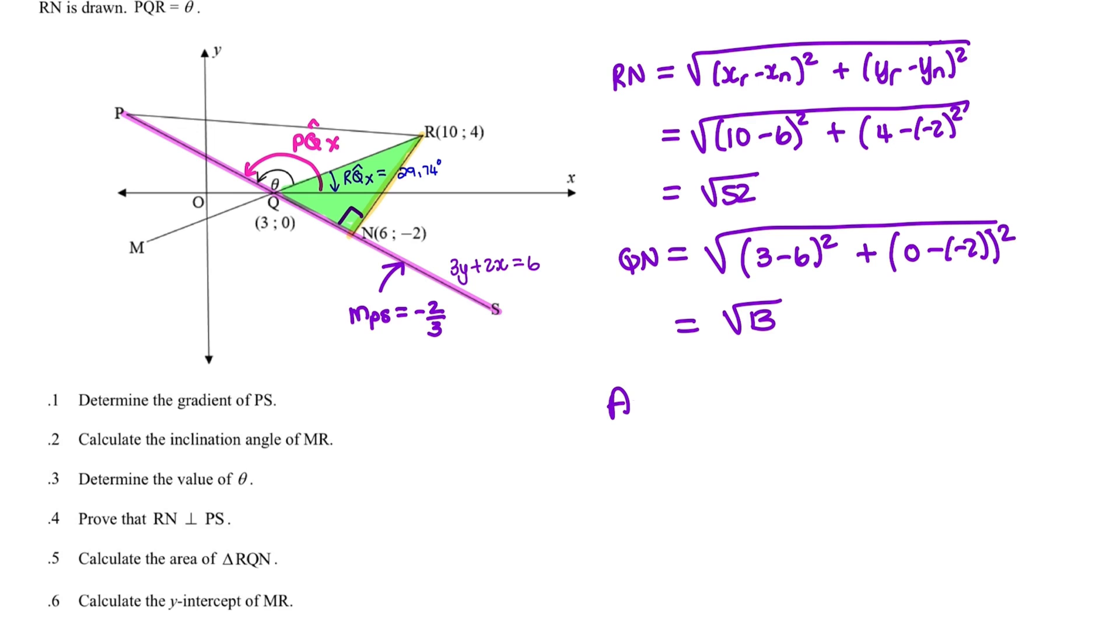So the area of the triangle RQN equals half the square root of 52 times the square root of 13. And when you use your calculator, you'd find that this is 13. So no units were given, so you say 13 units squared.